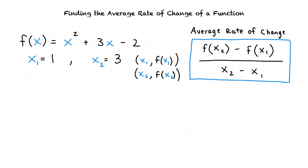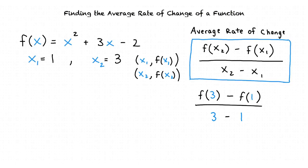Since we already know our x1 and x2 values, we can begin. We start by substituting the x2 and x1 values into our formula. The result after substituting is f of 3 minus f of 1 divided by 3 minus 1.